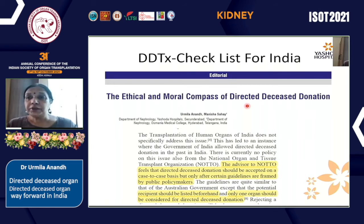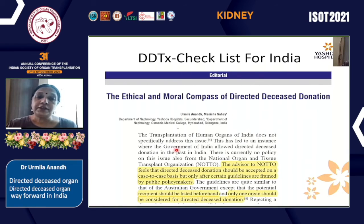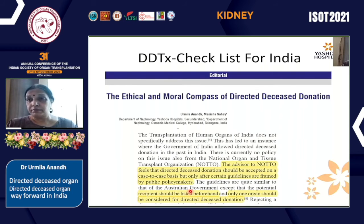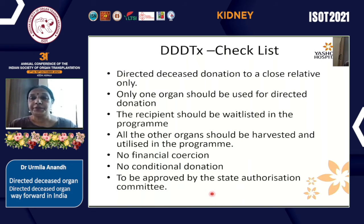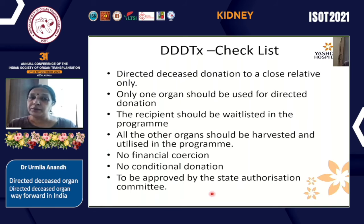Dr. Manisha Sahai and I had an editorial in the Indian Journal of Organ Transplantation, and I spoke personally with Dr. Sanjay Agarwal, advisor to NOTU. He feels that directed deceased donation should be accepted on a case-to-case basis, but only after guidelines are framed by public policy makers — similar to what the Australian government has published. The recipient should be listed beforehand, and only one organ should be considered for directed deceased donation. We propose a checklist: donation only to a close relative, only one organ for directed donation, the recipient must be waitlisted, all other organs harvested and utilized in the program, no financial coercion, no conditional donation, and the authorization committee must approve — even at midnight.